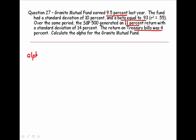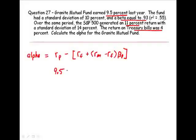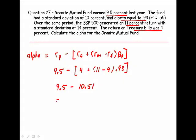To calculate alpha, we take the actual return on the portfolio and subtract from that the expected rate of return using the Capital Asset Pricing Model. The actual return on the portfolio was 9.5%. Plugging in our information: the risk-free rate was 4%, the return on the market was 11%, and the beta was 0.93. So we get 9.5% actual return minus the expected rate using CAPM of 10.51%, which gives us a negative alpha of 1.01%.